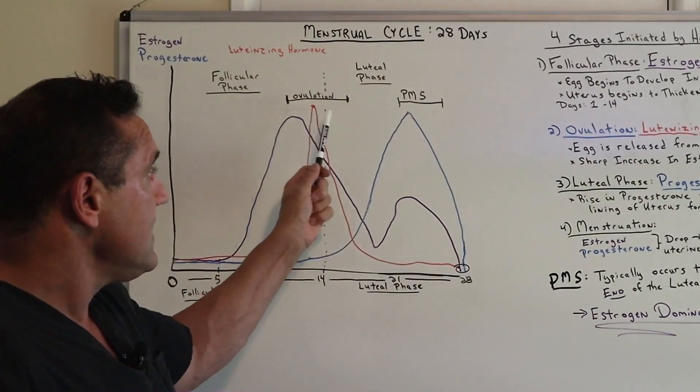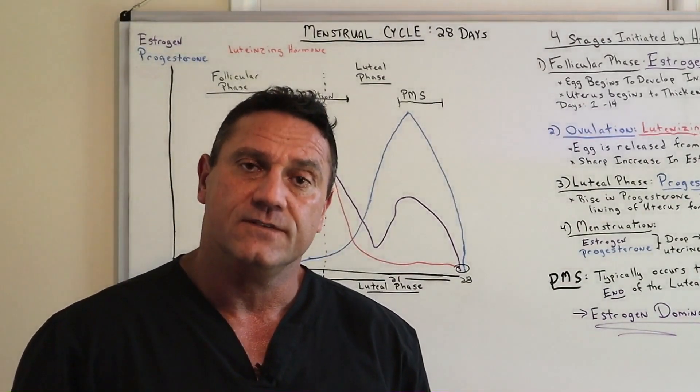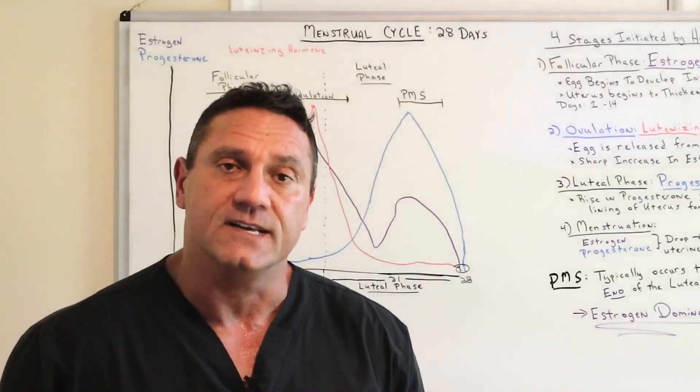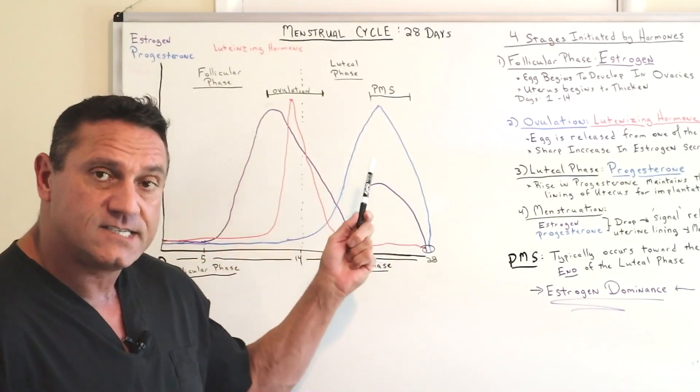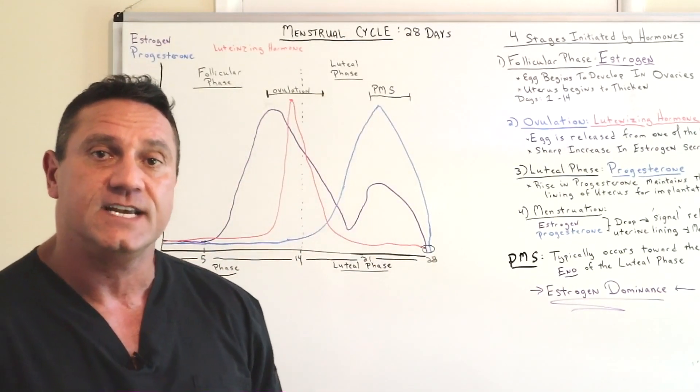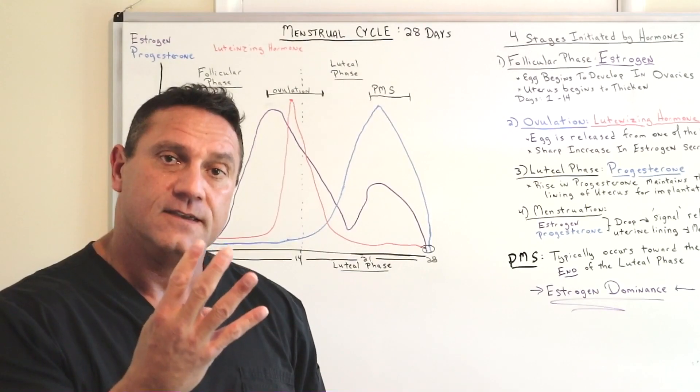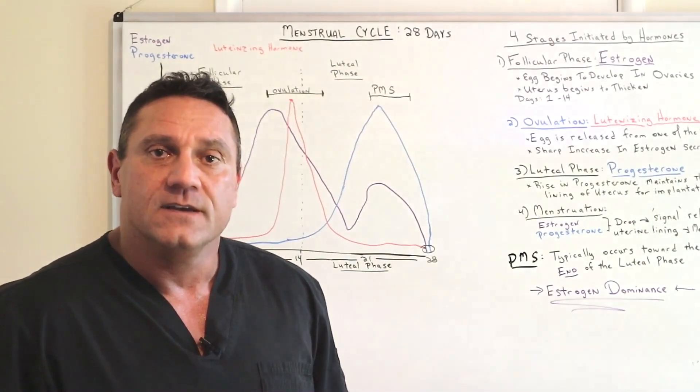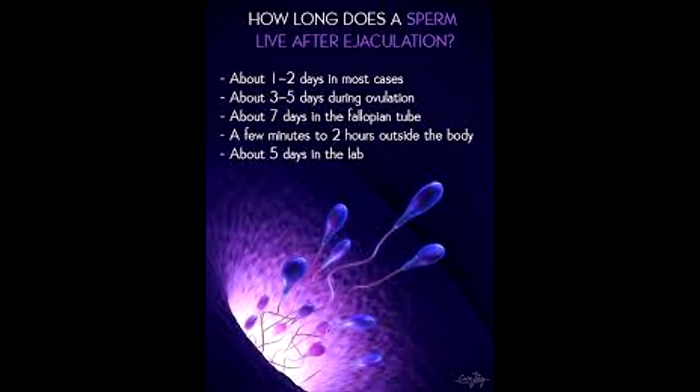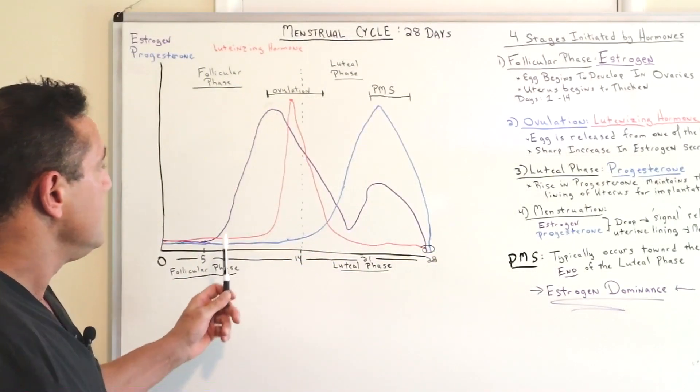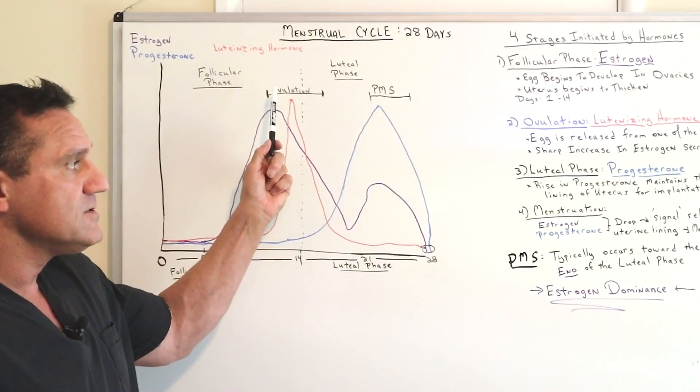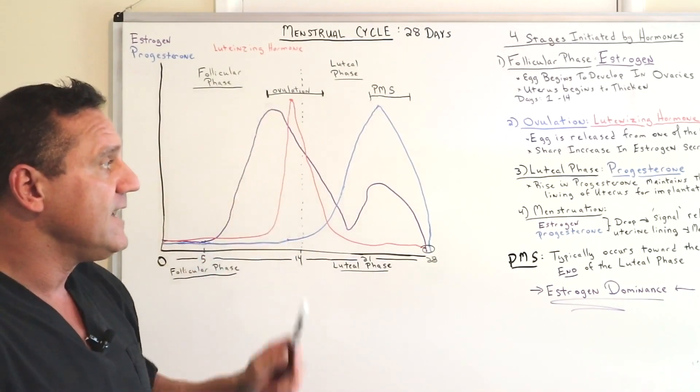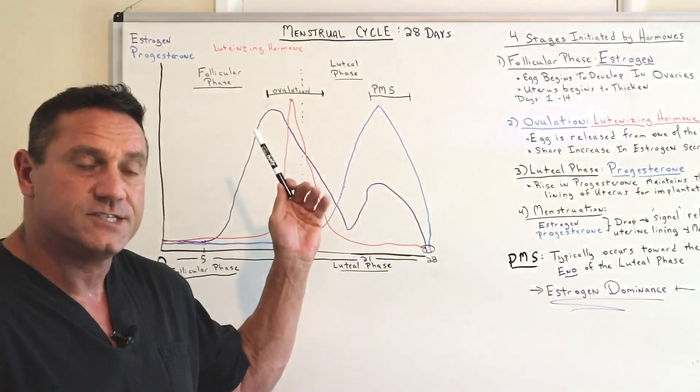Now this time right here, this four-day window, this is when the female is able to get pregnant. So out of a 28-day cycle, the female has a chance for only four days of a month. Sperm lives in the uterus and fallopian tubes for about three days. So there's a very small window that she could get pregnant. So you got the rise in luteinizing hormones, the egg is released from the ovaries, and there's a sharp increase in the estrogen secretions.